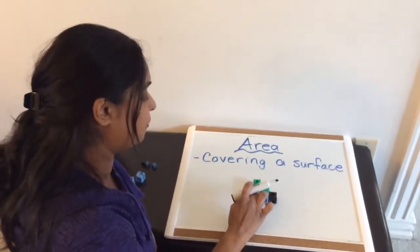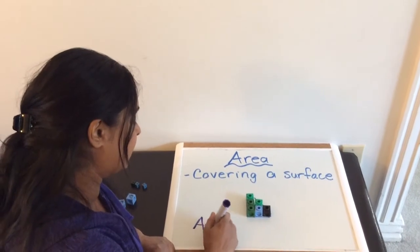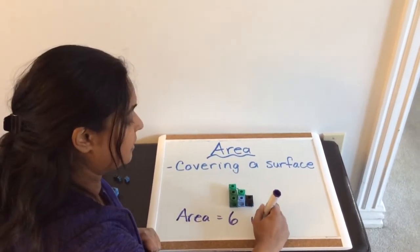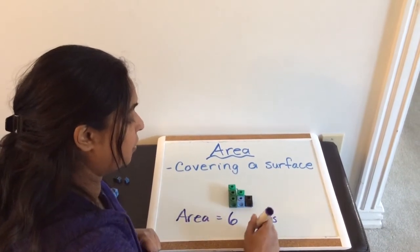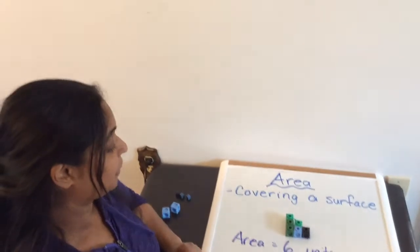One, two, three, four, five, six. So the area of this figure is six units. Or you can say six cubes, whatever you're using.